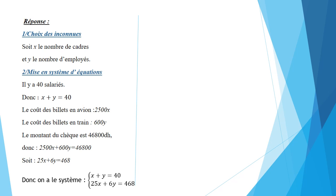Et on obtient le système suivant: X plus Y est égal à 40 et 25X plus 6Y est égal à 468. La troisième étape, c'est résoudre ce système.